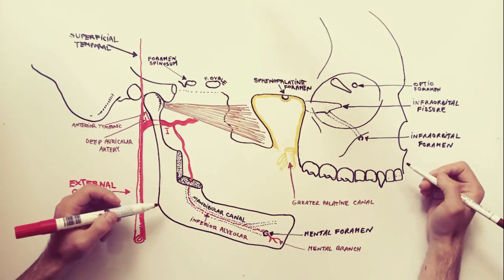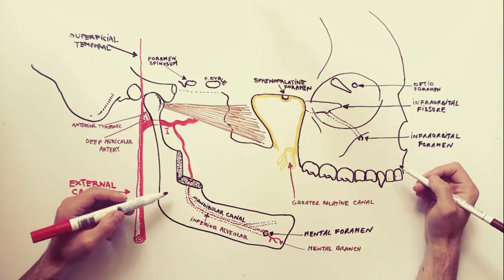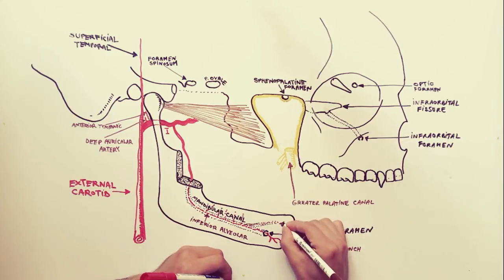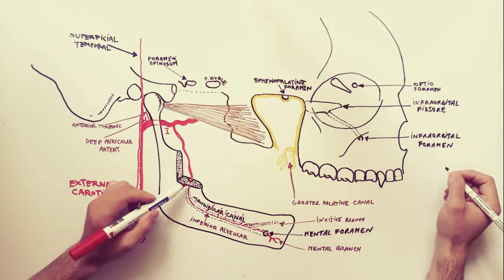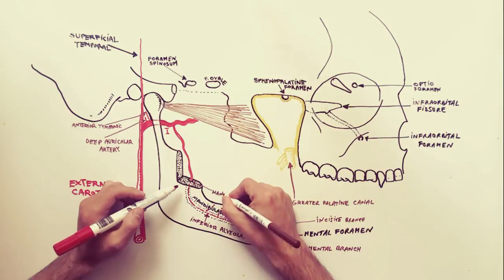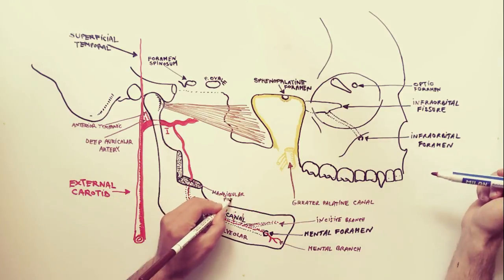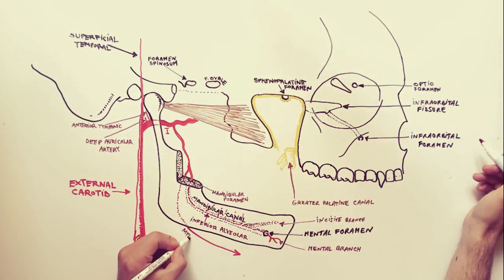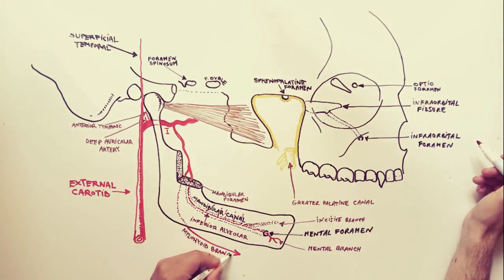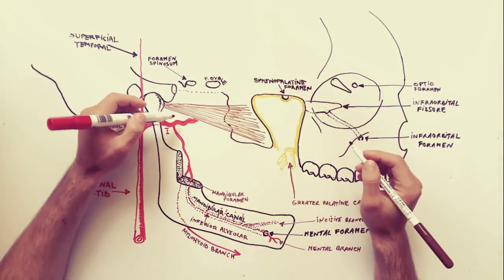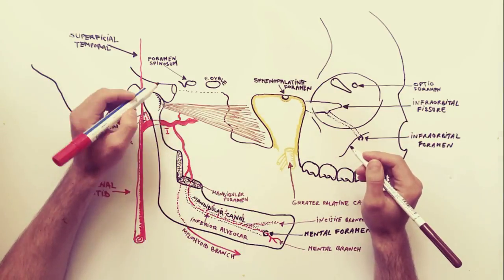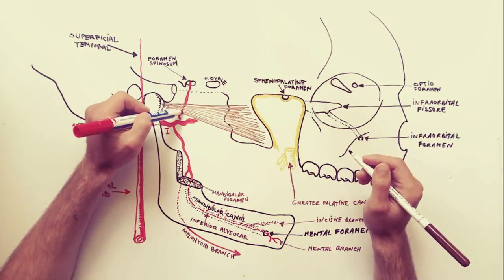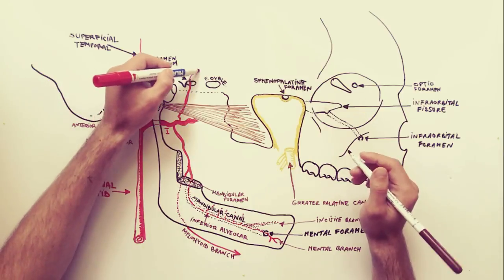The inferior alveolar artery also sends a small branch through the mental foramen called the mental branch, which anastomoses with other vessels on the face. Before entering the mandibular foramen, from the inferior alveolar artery arises the myelohyoid branch that accompanies the nerve of the same name. The middle meningeal artery runs upward and slightly forward, passing between the two heads of origin of the auriculotemporal nerve and entering the skull by way of foramen spinosum.